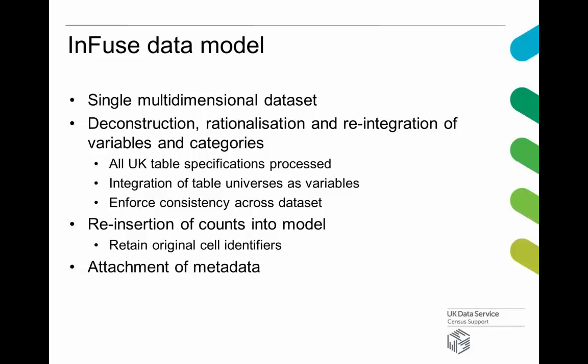We also tried to simplify the structure of the overall dataset by integrating things like table universes. A lot of tables have variables specified on the axes, but there's also something called a universe. Quite often tables are only produced for people of working age, 16 to 74. Once we had all of these cleaned up and rationalised sets of variables, we were able to reinsert the counts — which had been supplied in all of those thousands of different files — into this single descriptive model.